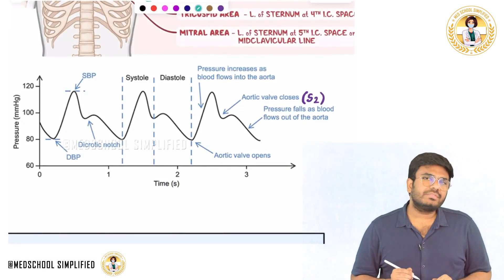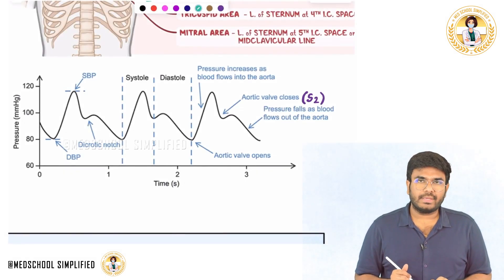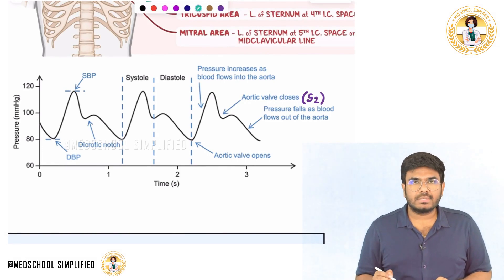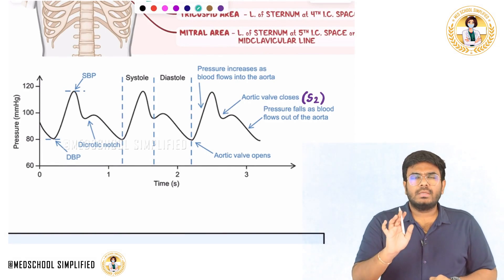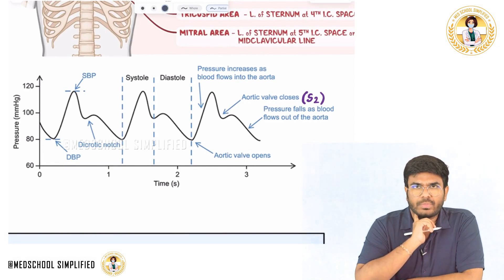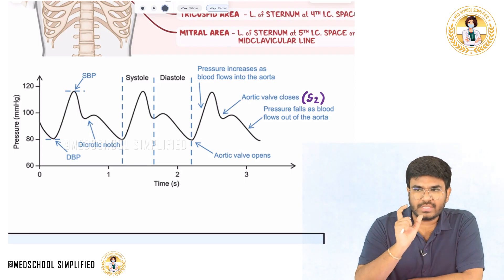Hello guys. In this video, let's discuss the pulse — the waveform of the pulse. In your carotids, carotids are the direct branches of the aorta. I'm talking about the major blood vessel. In major blood vessels, how is the pulse going to be?